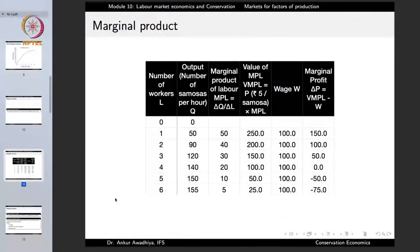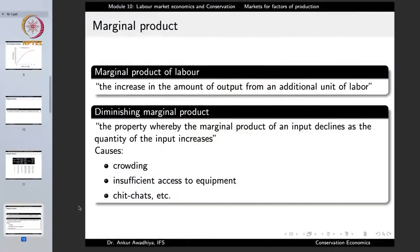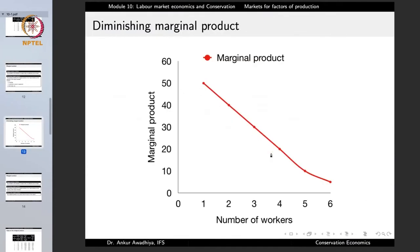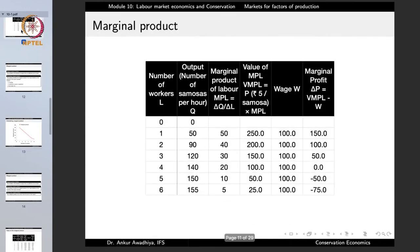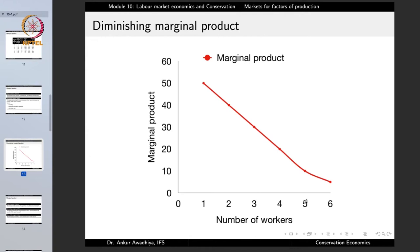With more and more labor, the marginal product of labor goes on decreasing. The reasons include crowding, insufficient access to equipment, chit-chats, and so on. If there is only one mixer or only two stoves and you have six laborers, not everybody has access to the stove at all times. So we can have diminishing marginal product because of physical crowding, insufficient equipment access, or chit-chatting. If we plot the marginal product, it was 50, then 40, then 30, then 20 - decreasing with an increase in the number of workers, showing the law of diminishing marginal product.